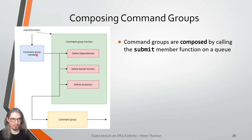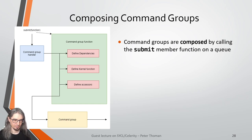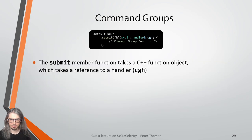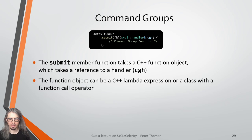When we have a queue, we can submit command groups to it. Those command groups represent commands to be executed on a device. The most important thing is executing kernel functions, which do the actual work with device code. But command groups also perform other tasks, for example copying data to and from the device and waiting on other commands to complete, building a command graph using these command groups. Submit takes a C++ function object — most commonly using a Lambda expression — and the body of that function object represents the command group function.